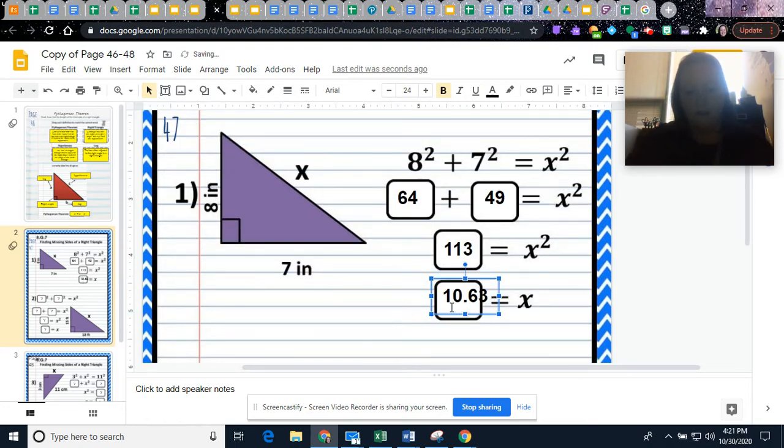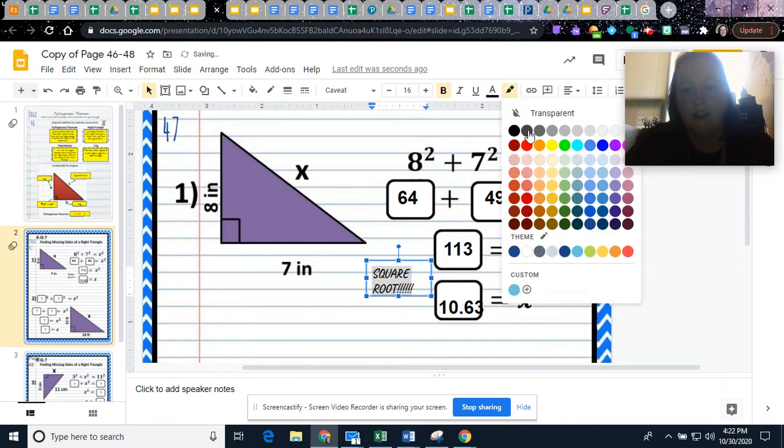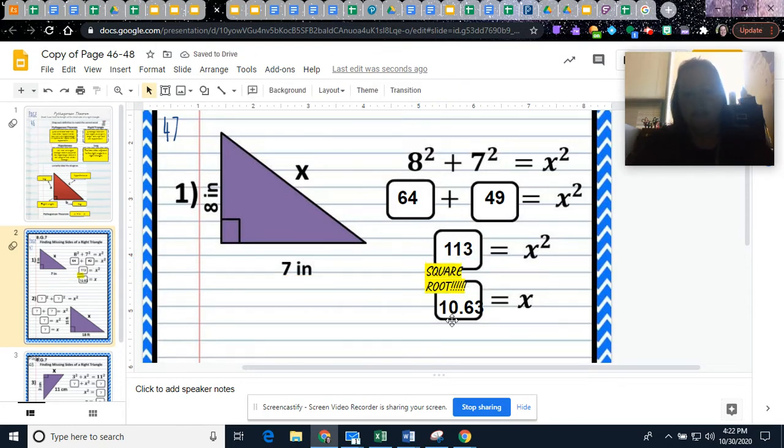Now, I want you to create a text box right here. In all caps, I want you to make it say square root. I want you to bold it. You can change the font, you can change the size, and I do want you to highlight it. Between the 113 and 10.63, I want it to say square root because I don't have it where you can draw the square root symbol over this.